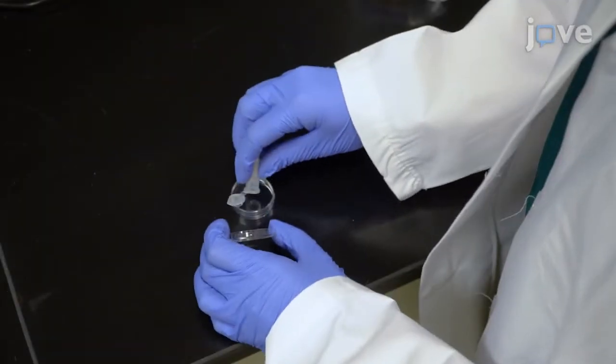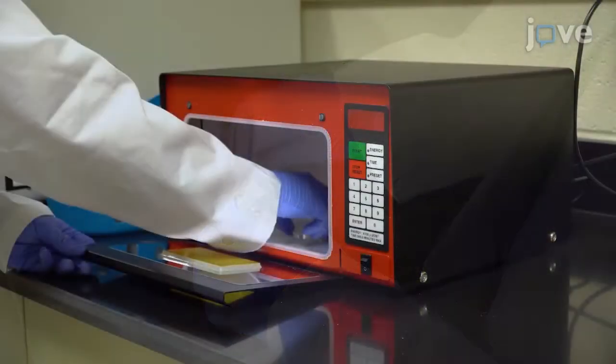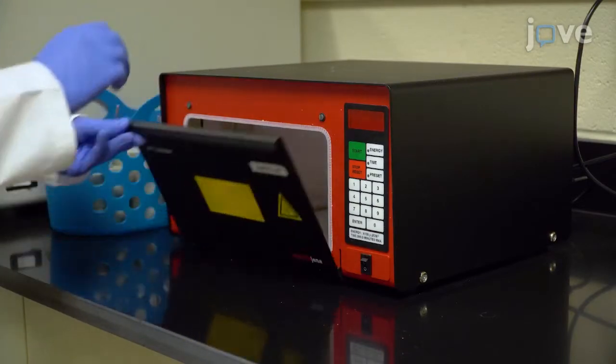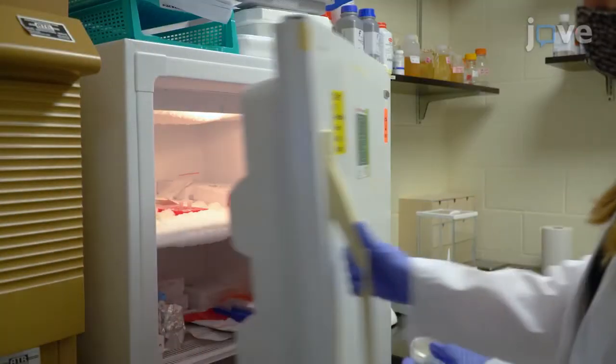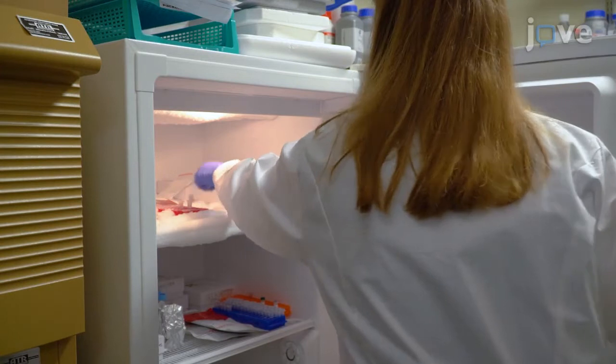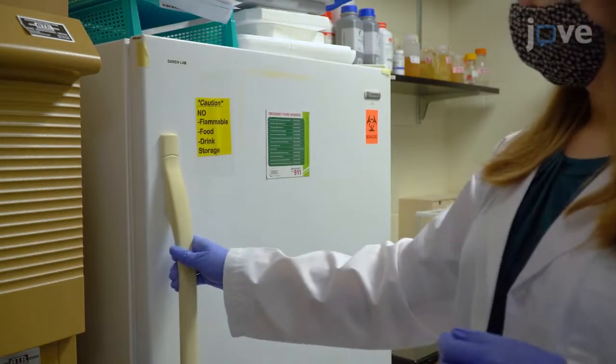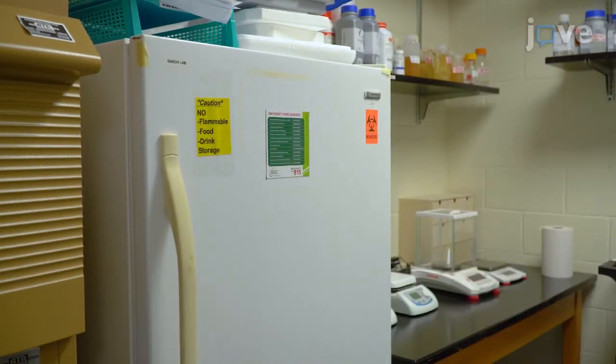To begin, sterilize the mucin-containing medium under ultraviolet light for four hours. Transfer the UV-treated mucin into sterile 1.7 milliliter tubes under sterile conditions and store the tubes at minus 20 degrees Celsius.